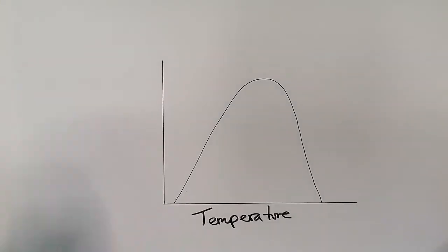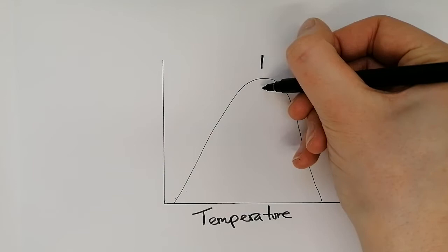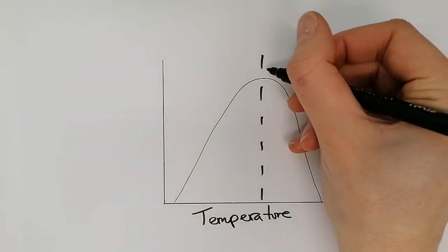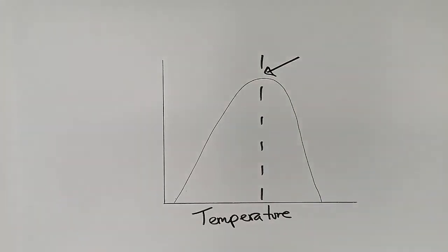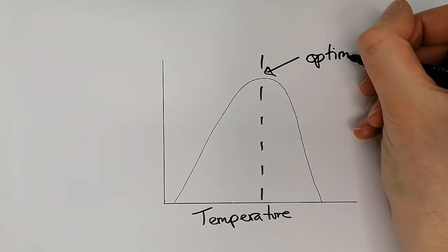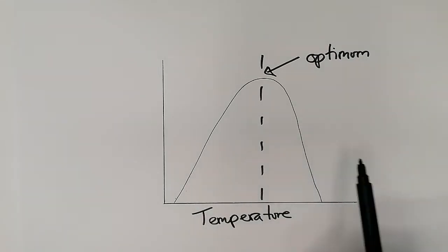Photosynthesis is about producing as much glucose as possible. On a simplified version of this graph — temperature along the bottom, rate of reaction up the side — we split the graph into two sections on either side of the highest point. That highest point is our optimum temperature. One side is too cold, the other side is too hot.